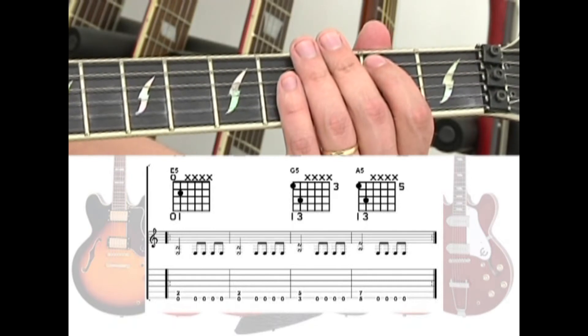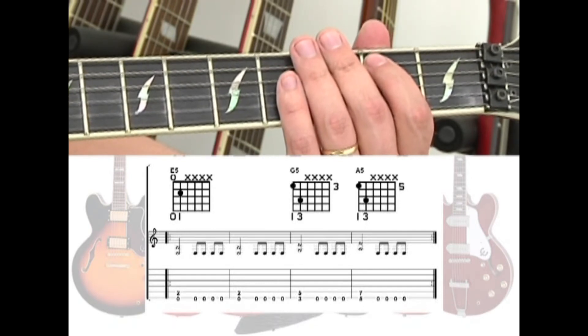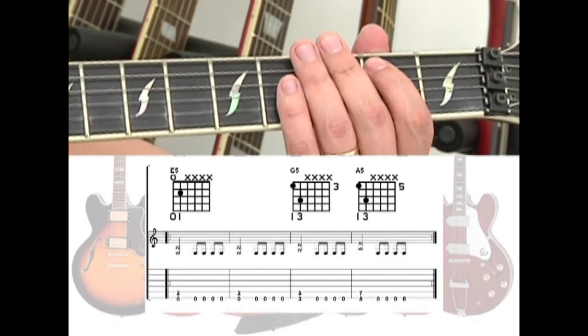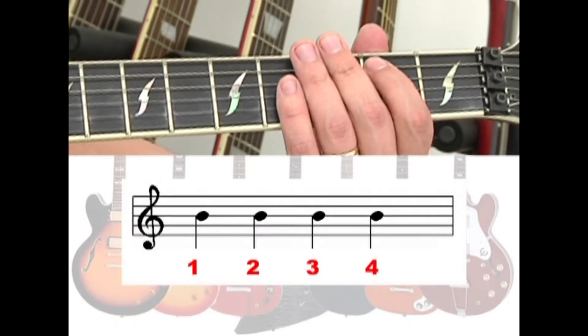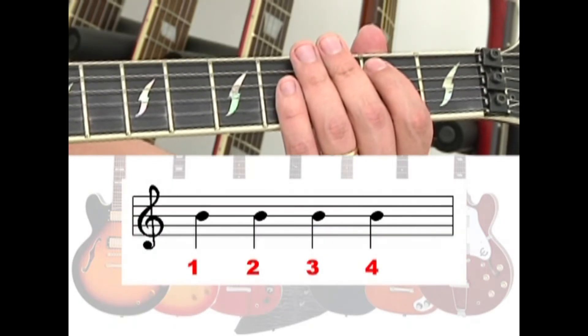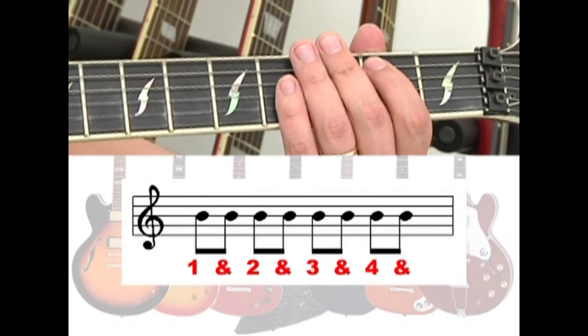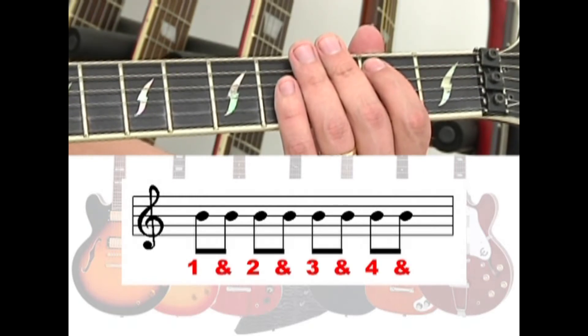The rhythm introduces 8th notes. 8th notes require us to divide each beat into two pulses. So instead of counting 1, 2, 3, 4, we count 8th notes as 1 and, 2 and, 3 and, 4 and.